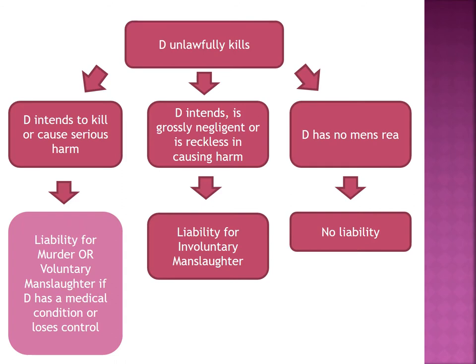Looking at a diagram showing where voluntary manslaughter sits in the fatal offences arena — at the top you must have an unlawful killing, so a death of a victim. Causation has to be made out to prove the defendant has killed the victim. The intention — the mens rea — will then dictate what the defendant will be liable for, if anything at all. If a defendant has no mens rea at all, not even recklessness, there will be no liability.